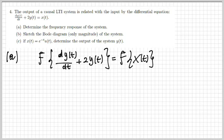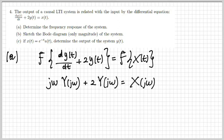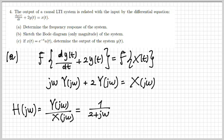To start, we take the Fourier transform of both sides of the equation. We know that differentiation in the time domain corresponds to multiplication by jω in the frequency domain. So the Fourier transform of the derivative of y is jω·Y(jω), where Y(jω) is the Fourier transform of y(t). Continuing, plus 2Y(jω) equals X(jω). The frequency response H(jω) is the ratio between output and input in the Fourier domain, which gives us 1 over (2 + jω) — a first-order term.